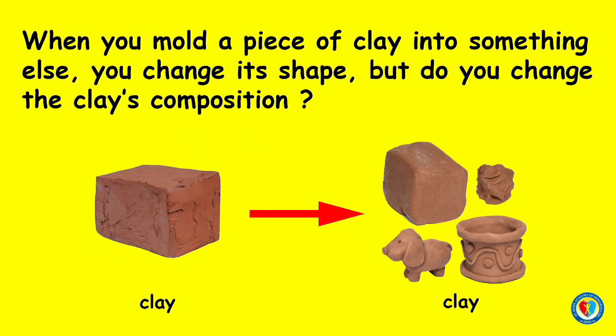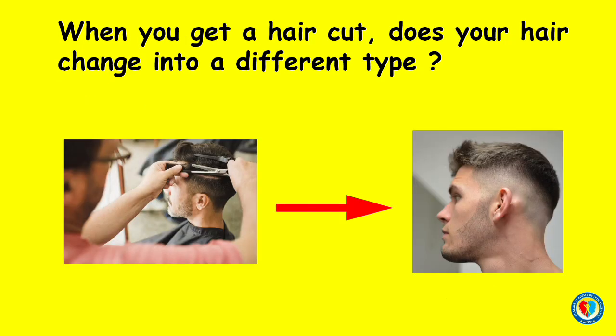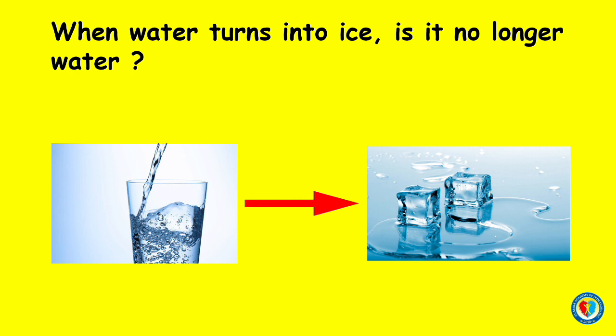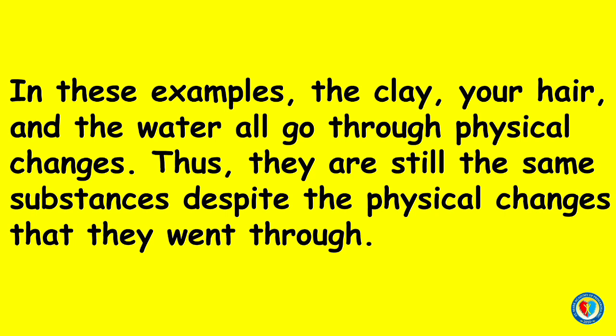When you mold a piece of clay into something else, you change its shape, but do you change the clay's composition? When you get a haircut, does your hair change into a different type? When water turns into ice, is it no longer water? In these examples, the clay, your hair, and the water all go through physical changes. Thus, they are still the same substances despite the physical changes that they went through.